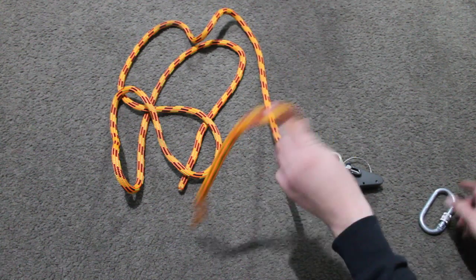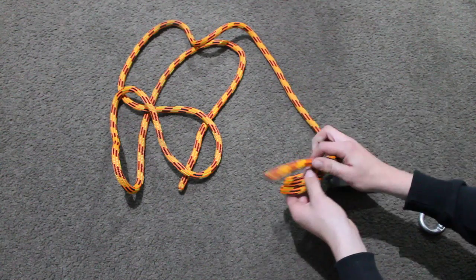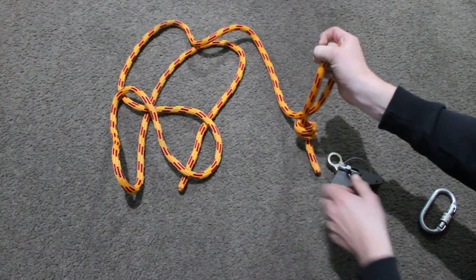Okay, to get started, in one end we want to tie a barrel stopper knot so that our cam doesn't go off the end of the rope.